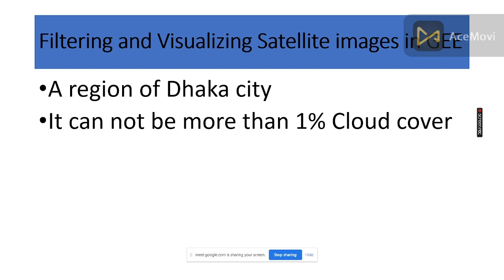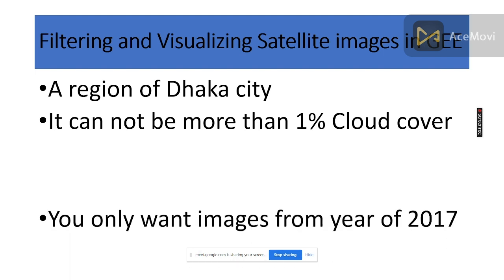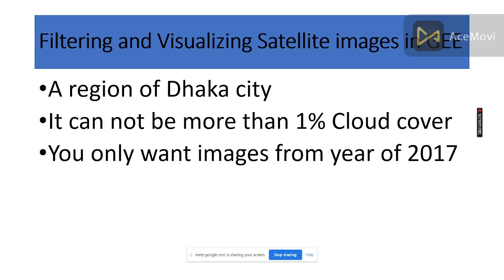The second factor is image properties. For example, I want Sentinel-2 imagery with less than one percent cloud cover. I filter by this image property — I don't want all images, only those with no more than one percent cloud cover. The third factor is a specific time period — for example, only the year 2017, or a specific season like winter or summer.